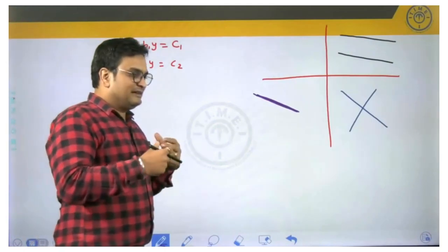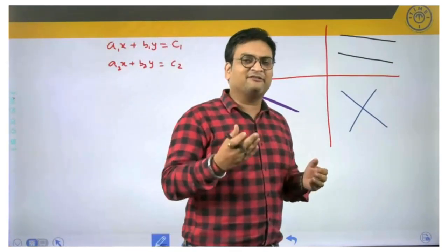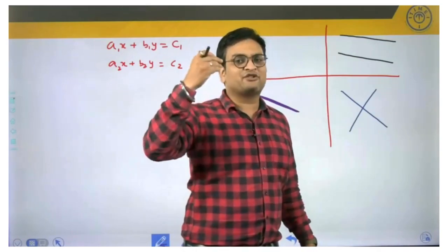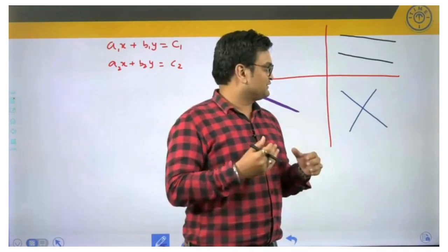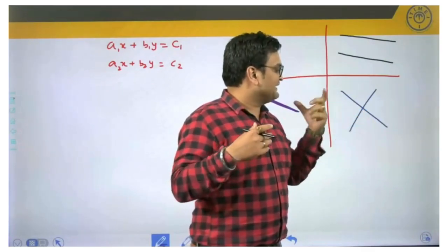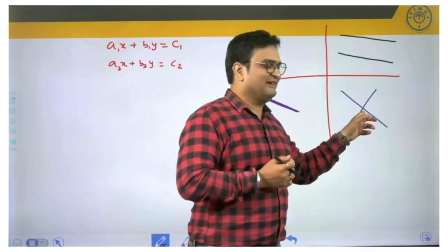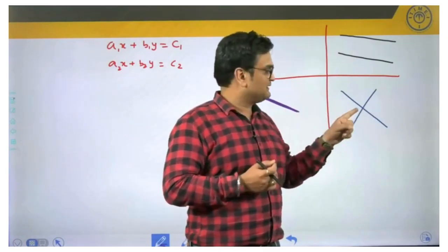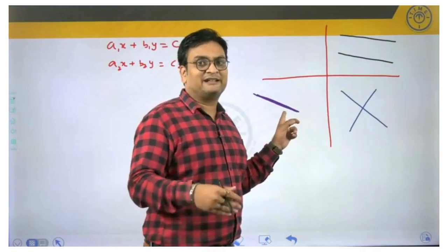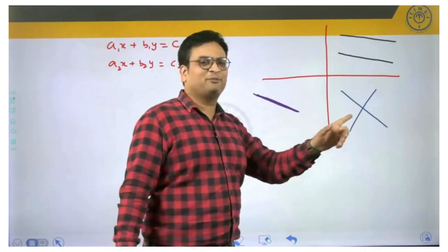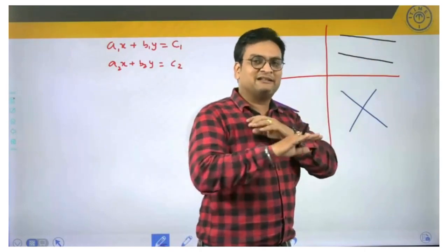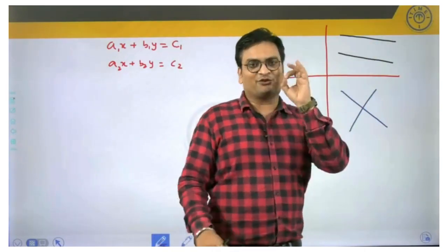One more thing in the graphical approach: wherever the lines intersect, that point is called a solution point. So when the lines are intersecting only once, we have only one solution. When the lines are infinitely intersecting — intersecting at every point — we will have infinite solutions. And since parallel lines never intersect, they will have 0 solutions.